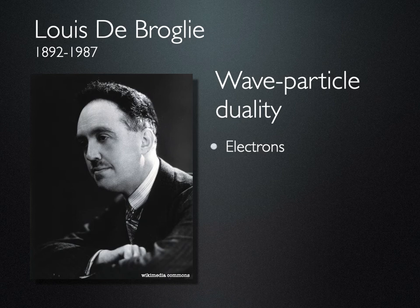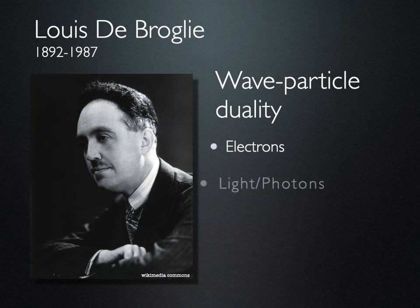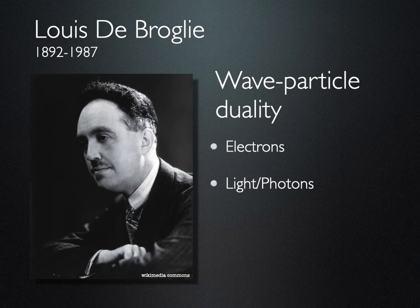Sometimes we measure electrons and they behave like waves; in other experiments they behave like particles, and sometimes at different parts of the same experiment. But there is no one measurement that measures an electron as both a wave and a particle at the same time. Later we looked at the photoelectric effect and Einstein's explanation that light comes in packets or small particles known as photons, so light also can behave like a wave or a particle.